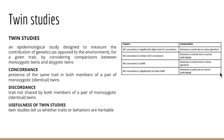When monozygotic concordance is significantly higher than dizygotic concordance, the interpretation is that the behavior is partly due to nature and genetics. If monozygotic concordance is similar to dizygotic concordance, the behavior is entirely due to nurture or upbringing. When monozygotic concordance is 100%, the behavior is entirely due to nature or genetics. And when monozygotic concordance is significantly less than 100%, the behavior is partly due to nurture and partly due to nature.